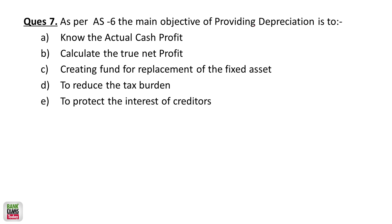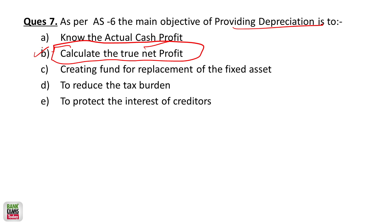As per AS6, the main objective of providing depreciation is to calculate the actual net profit — to show the true picture of the business. While depreciation does reduce the tax burden, that is a secondary effect. The primary objective is to calculate the net profit and present the correct picture of the business's financial position.